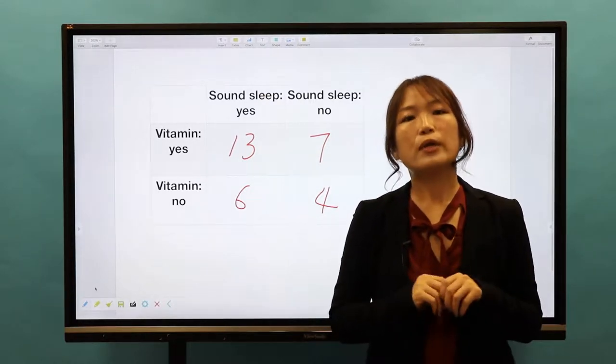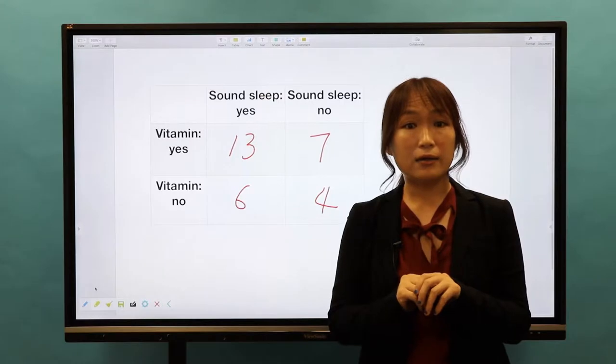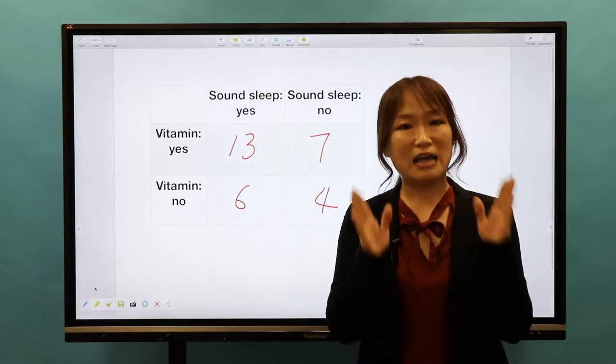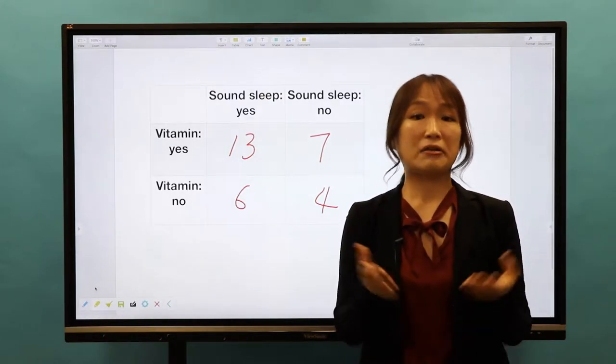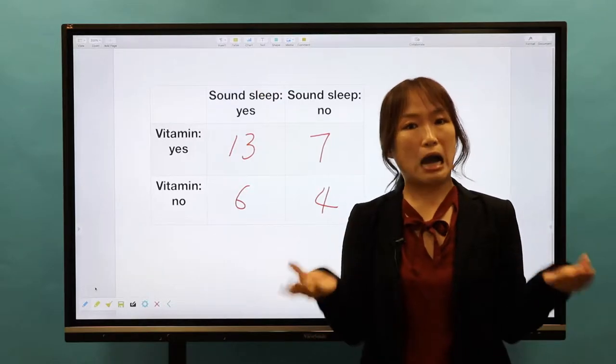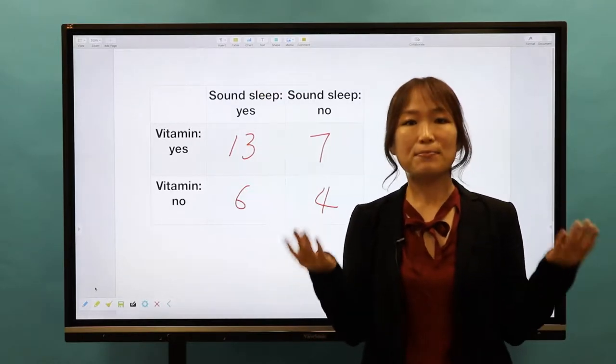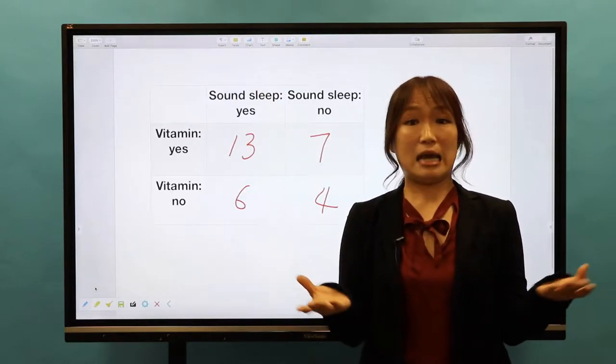For example, we could have a category of eye color. Under that category, we could have categorical variables like brown, blue, black, green, and so on.